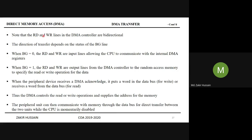Note that the read and write lines in the DMA controller are bi-directional. The direction of transfer depends on the status of the BG line. When BG is 0, read and write are input lines, allowing the CPU to communicate with the internal DMA registers — this means there is no IO request at that stage, so there is no bus grant.